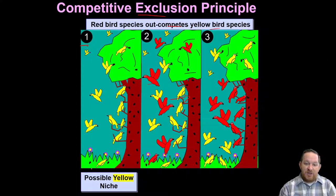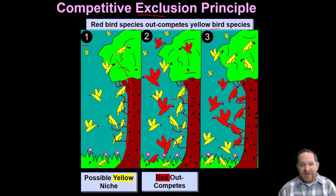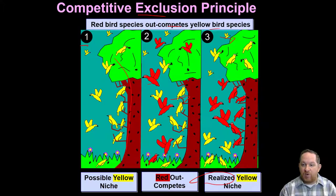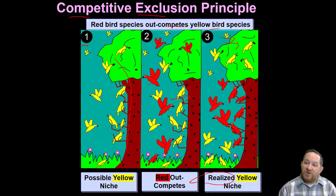The yellow birds have this entire possible, or fundamental, niche — what they could potentially do. However, because the red birds out-compete, it forces the yellow into different niches. Maybe they'll have to come up in the canopy of the tree, or maybe they'll be on the ground — we would call that a realized niche. In reality, because the red are out-competing for insects on the tree trunk, the niche for these other organisms has to move. The competitive exclusion principle says that when there's competition, one species might be excluded and have to find a different niche to survive.